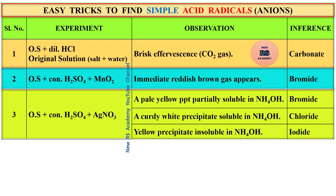The second test also uses sulfuric acid, then add silver nitrate solution. A pale yellow precipitate partially soluble in ammonium hydroxide indicates bromide. A curdy white precipitate soluble in ammonium hydroxide indicates fluoride. A yellow precipitate insoluble in ammonium hydroxide indicates iodide.